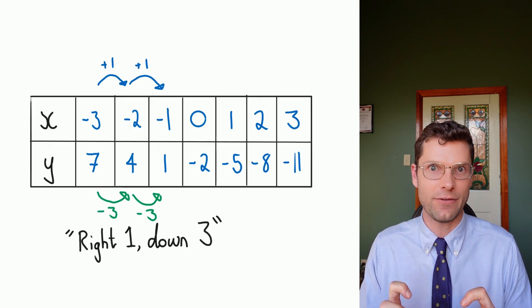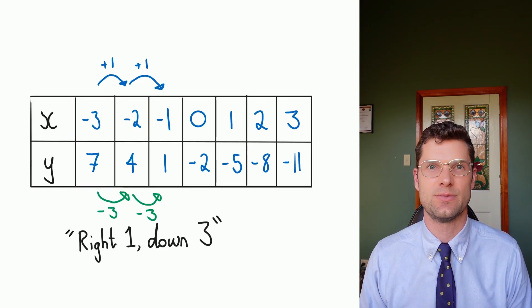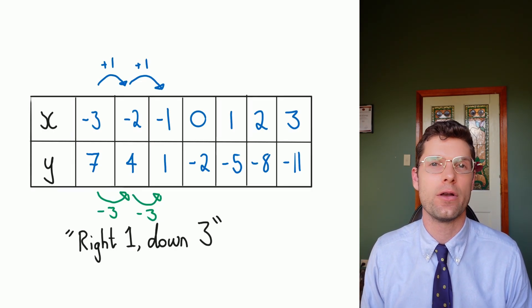So what this is saying, graphically, is that as we go to the right one spot, we are going down three spots. And that's going to be super important for our next lesson.